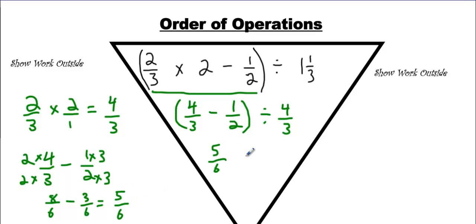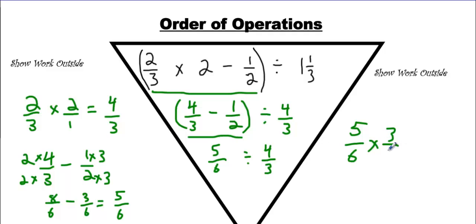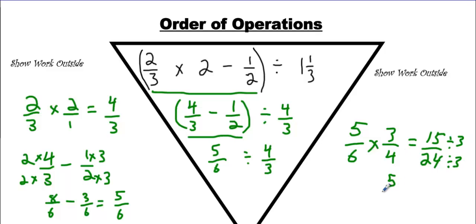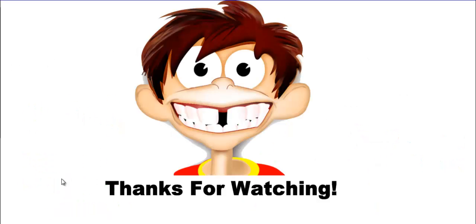So we have 5 over 6 divided by 4 thirds — brackets are gone because we solved all the numbers inside. Now we can solve this: 5 over 6, change this to times, flip this. We're almost there — we got 15 over 24. Are we going to write 15 over 24? No, we're going to reduce it first. Divide by 3, divide by 3, and that's going to make 5 over 8.